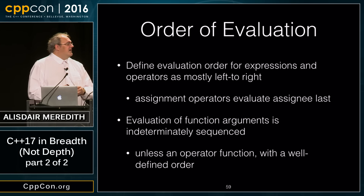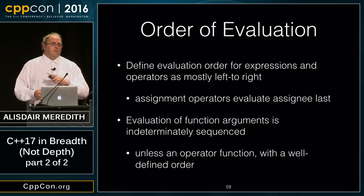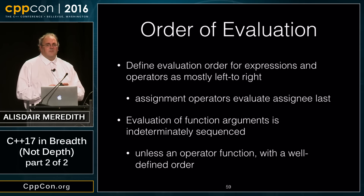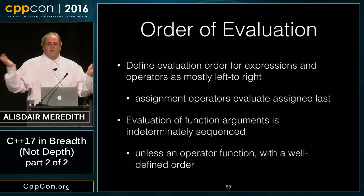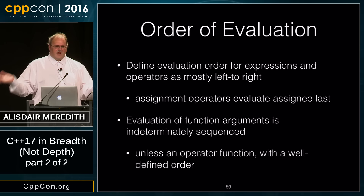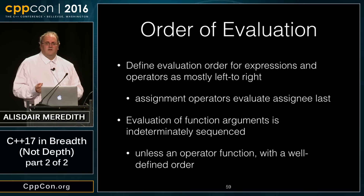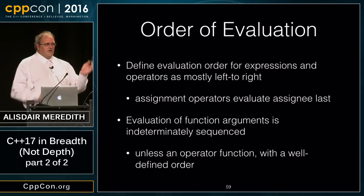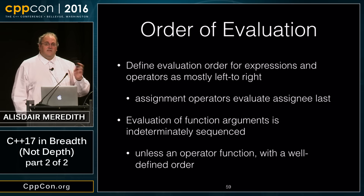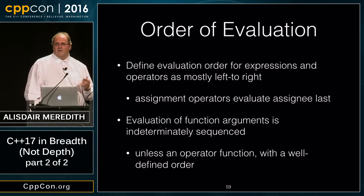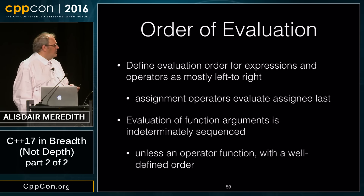There was a desire to make evaluation left-to-right, but optimizer folks who implemented it said switching from right-to-left gave them a performance penalty they didn't want to pay. So for C++17 we're not nailing down the order beyond indeterminately sequenced, but there is now at least a sequencing to eliminate the most awkward corner-case bugs.